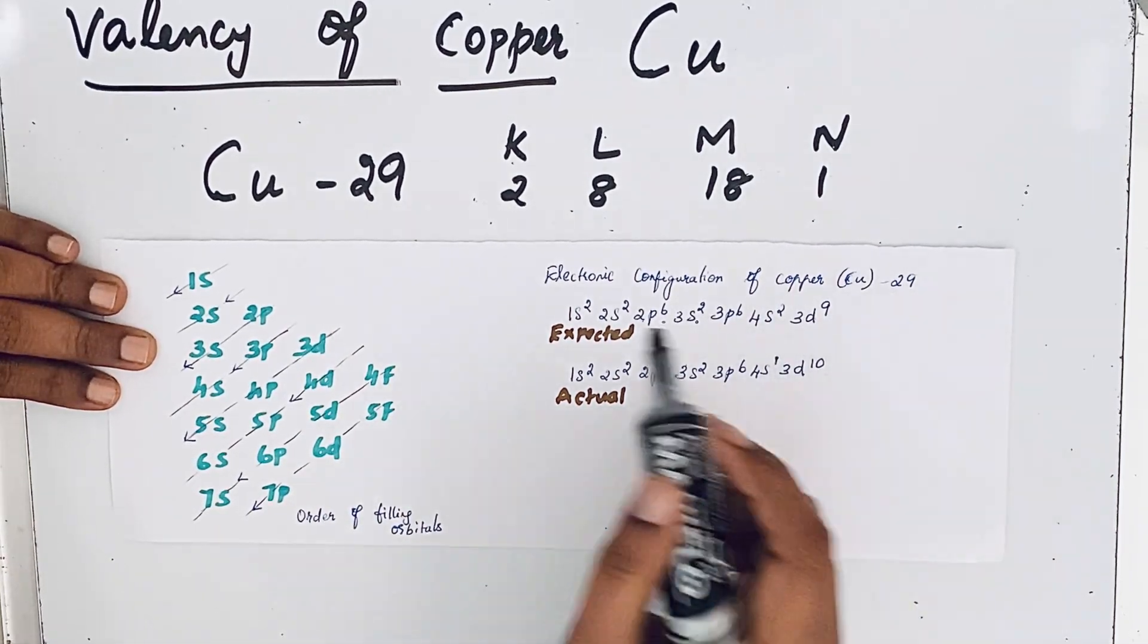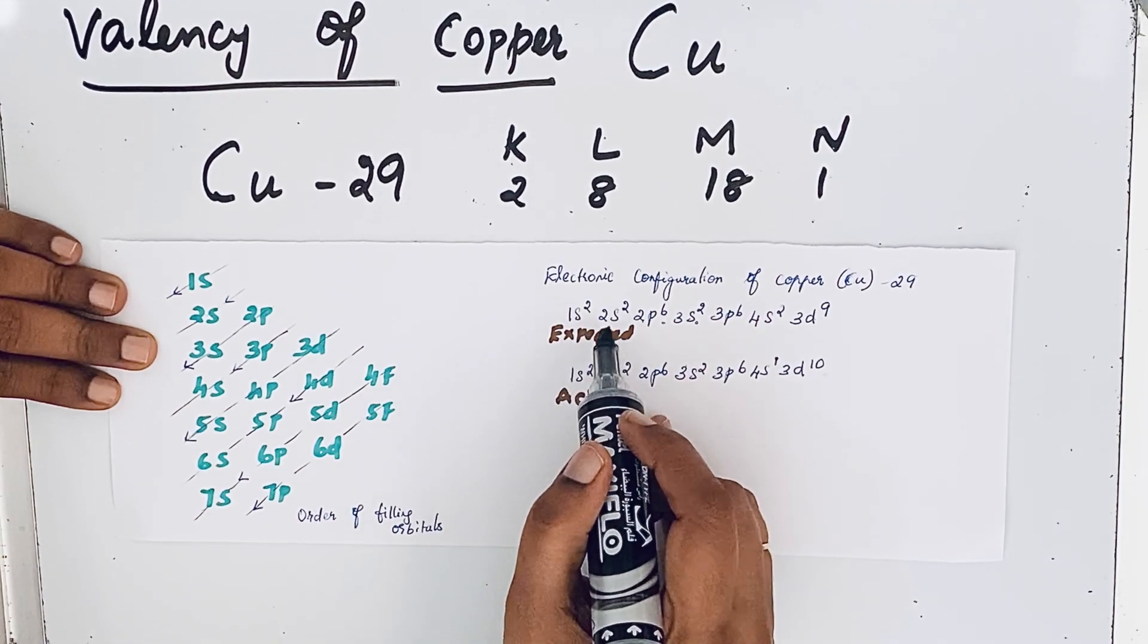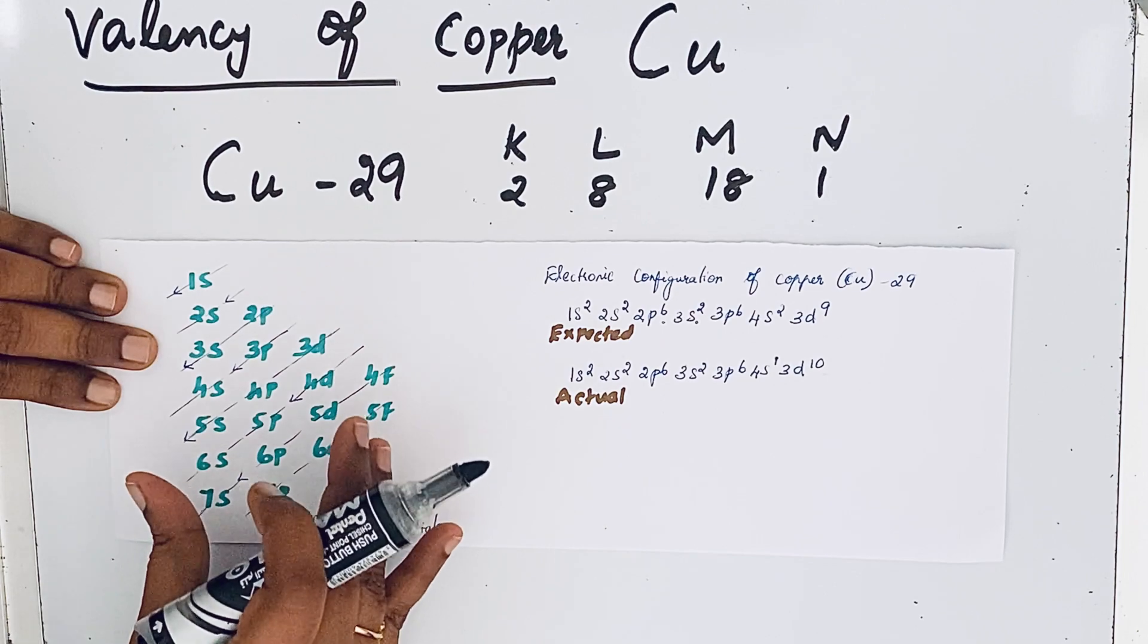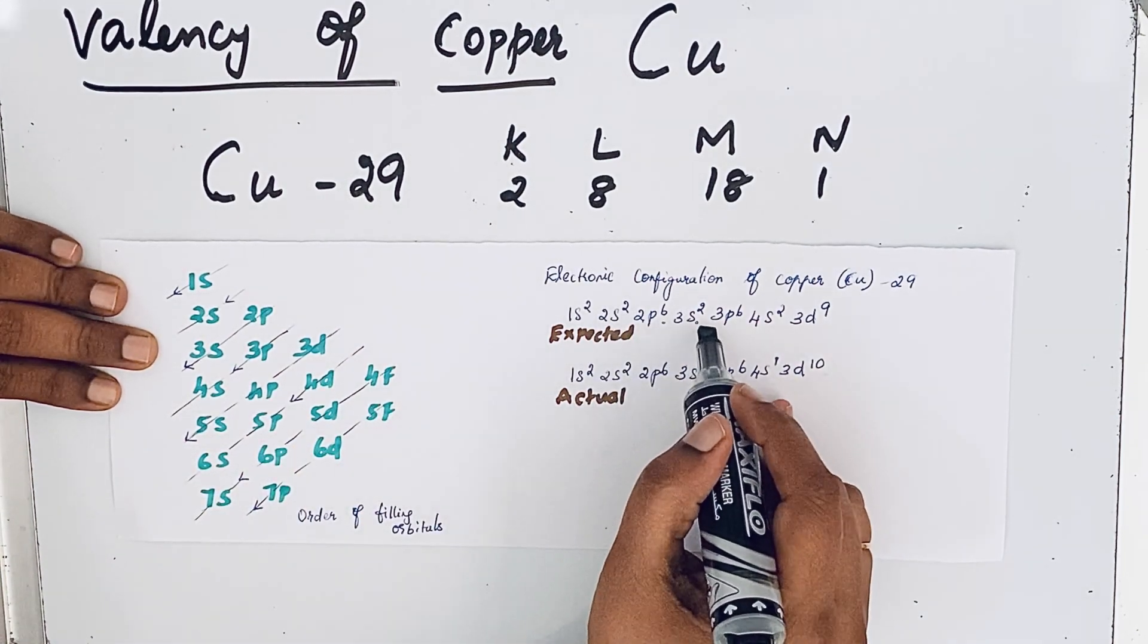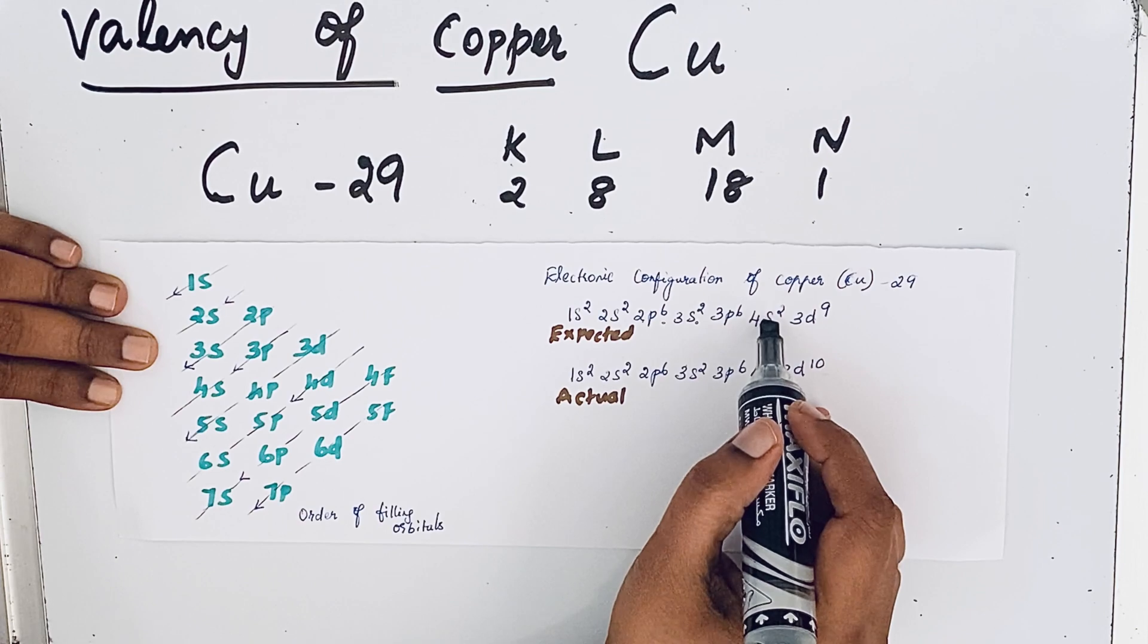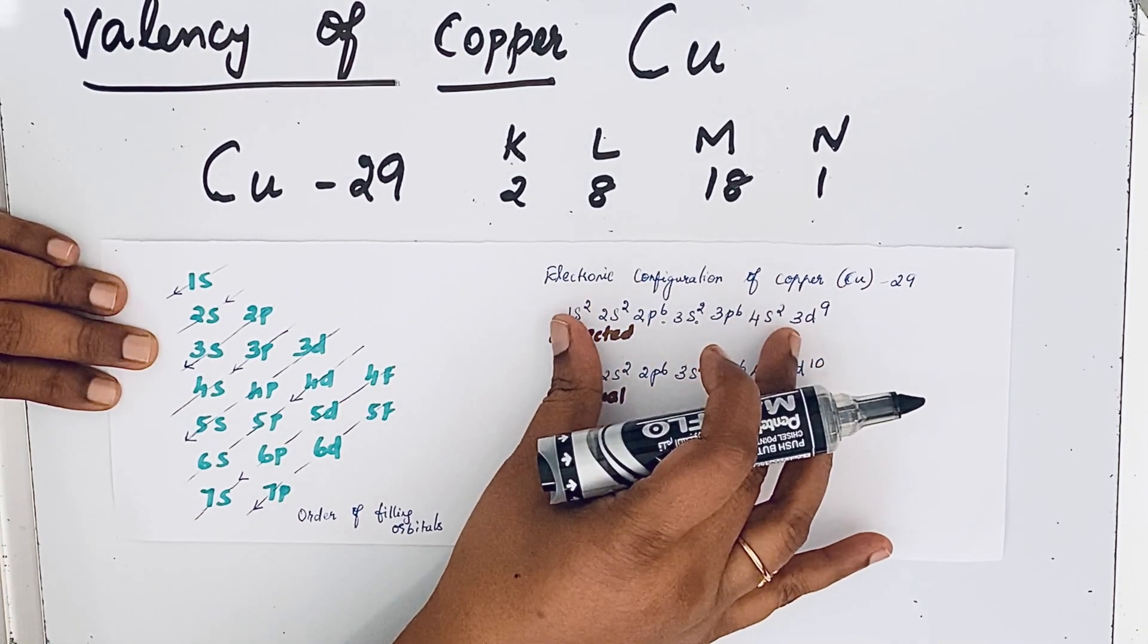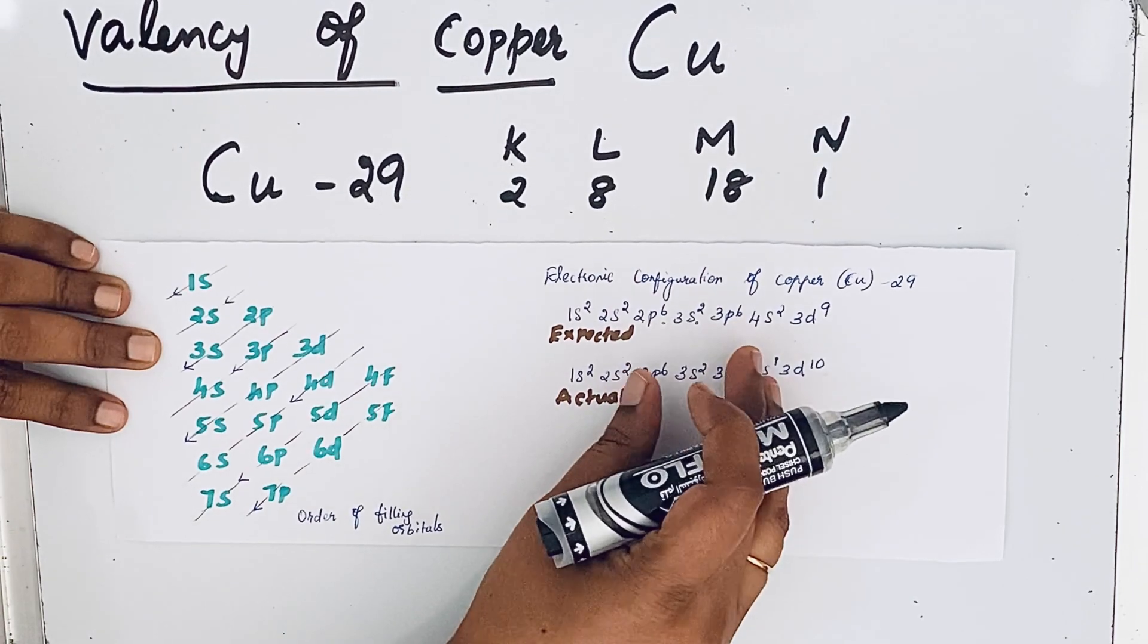For copper, atomic number is 29. The expected electronic configuration based on this filling order is 1s² 2s² 2p⁶ 3s² 3p⁶, then 4s², then 3d⁹. This is the expected one, but in case of copper, it is different.